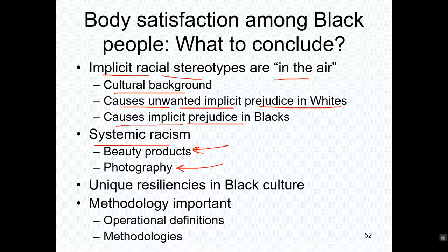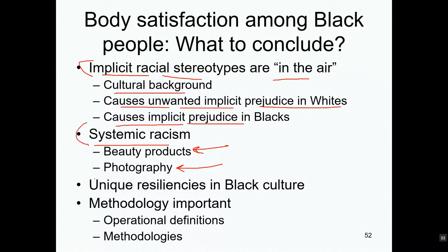The chemical composition of film was designed to photograph white people and not to respond at the end of the spectrum for black people. Cell phone cameras also use algorithms to interpret pixels, and most of those algorithms are tweaked so that white people look better. That's just systemic racism. It's really difficult for black people to have a sense of their own beauty when it's very difficult to produce images of them as they actually are.